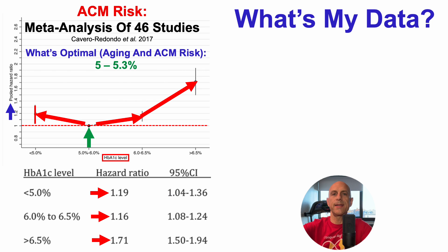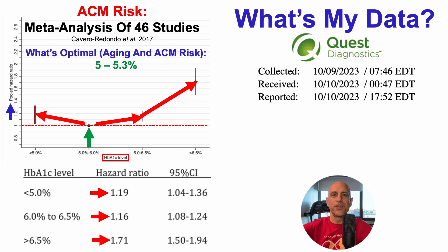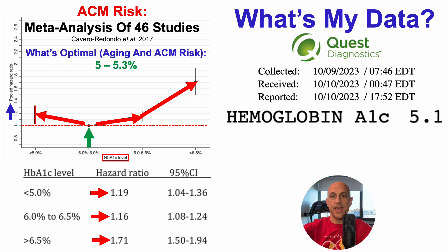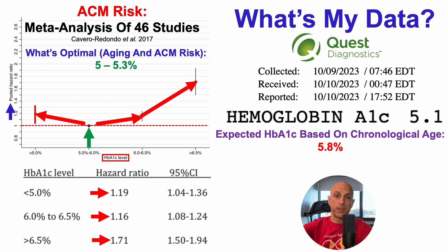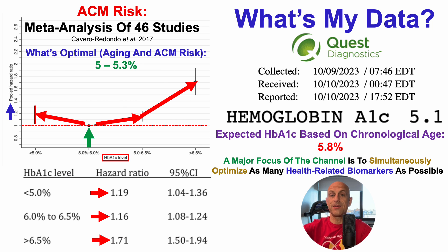Which brings us to my personal data — am I practicing what I'm preaching? This is from the October 9th blood test. On that day, HbA1c was 5.1%. If you look at the plots I just showed, my expected HbA1c based on chronological age is 5.8%. When considering that a major focus of the channel is to simultaneously optimize as many health-related biomarkers as possible, so far so good with HbA1c, as it's younger than expected based on chronological age.